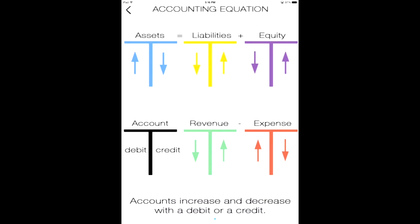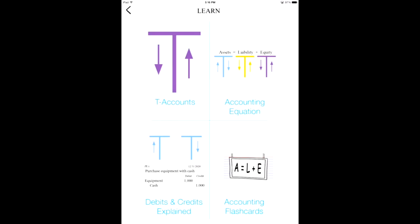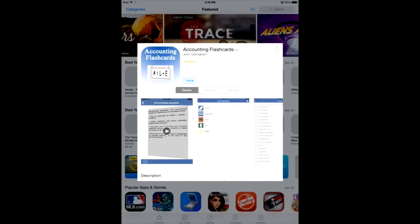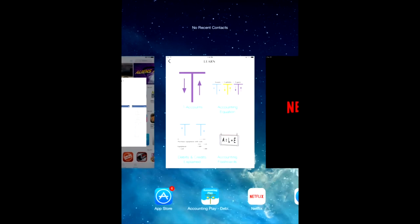Accounting equation — this fundamentally is how you increase and decrease accounts. Go to accountingplay.com or email me with any questions if something seems off. You'll notice the assets increase with a debit and revenue increases with a credit. The two similar accounts are assets and expenses, so this is going to take a little bit of learning time. Also in the learning section there are journal entries, and there are ways to access my other app, Accounting Flashcards, which has lessons and more.